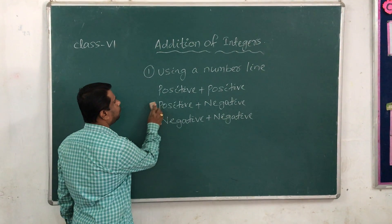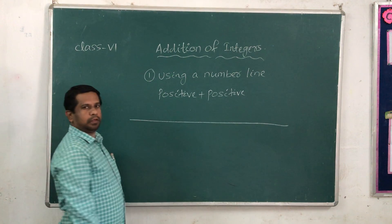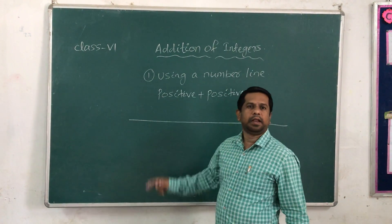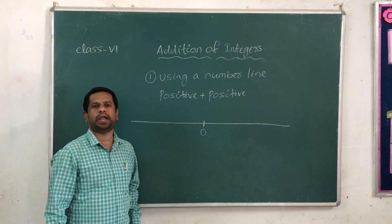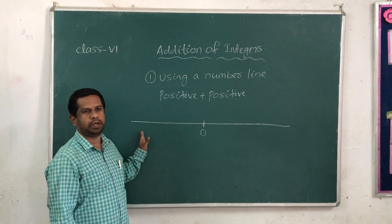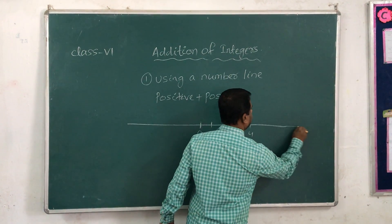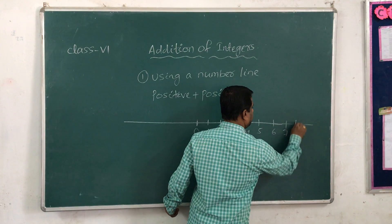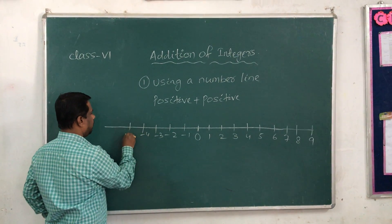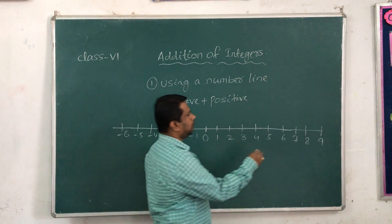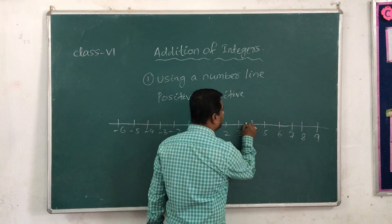Let us start with positive plus positive integer. I am drawing the number line. A number line is a straight line which represents the numbers. You mark one point as zero. If you go to the right side of zero, you find positive integers, and if you move to the left side of zero, you find negative integers. You mark integers: one, two, three... and minus one, minus two, minus three, and so on. The distance between two consecutive numbers is called the unit distance.